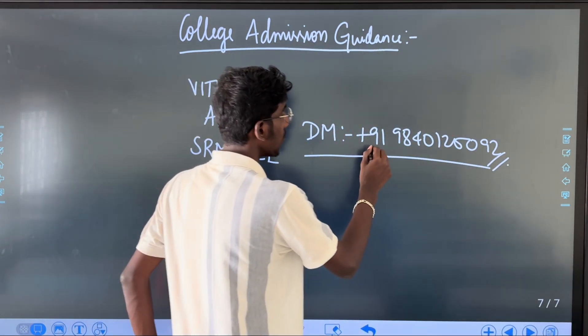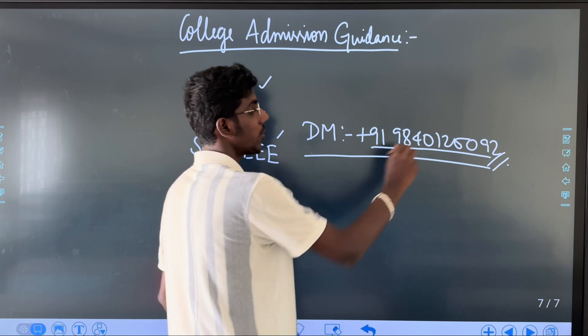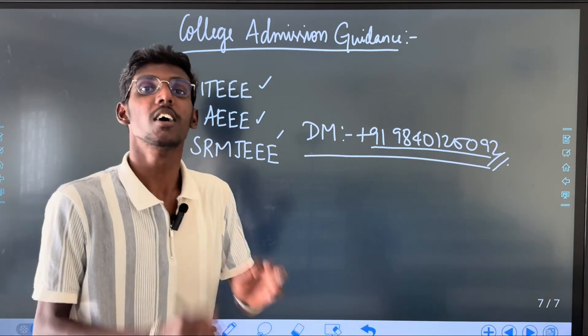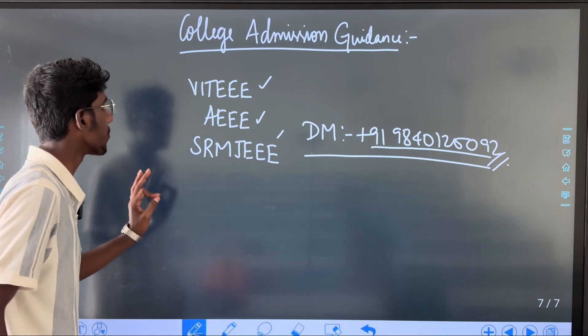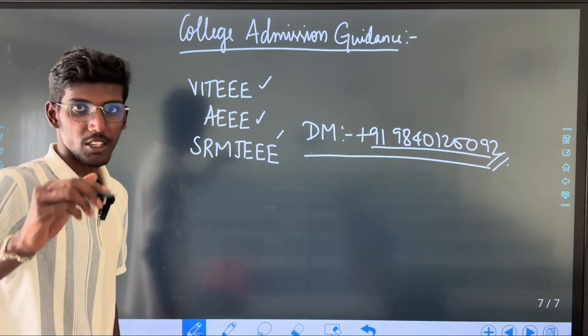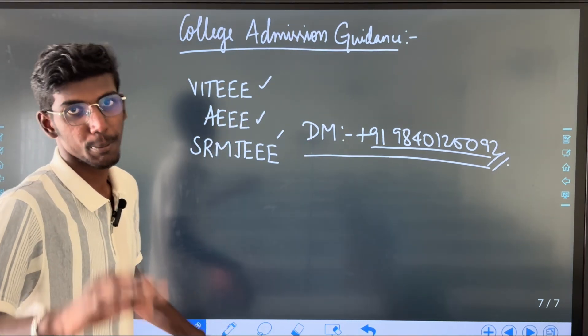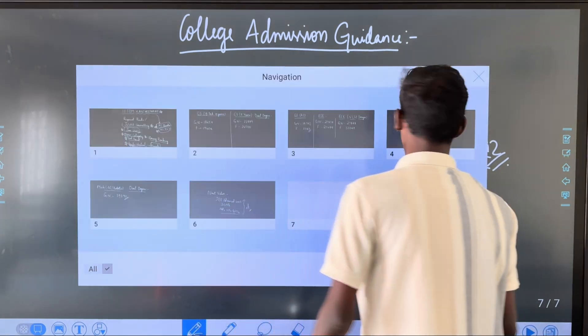If you want to request for DM, the number is 9840125090. You can reply to this number. If you want to request for DM, you can get help. Let's start with our ranking.